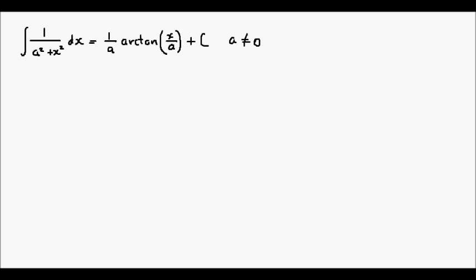Hello and welcome. Let's prove a very interesting integral result. If you look up any table of integrals, you'll find that the integral of 1 over a squared plus x squared with respect to x is equal to 1 over a times the arctangent of x divided by a, plus c, an integration constant, provided that a is not equal to 0.